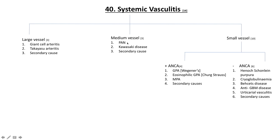Medium vessel vasculitis is divided into polyarteritis nodosa, called PAN, which is infamous for causing mononeuritis multiplex and has a close association with hepatitis B. Then there is Kawasaki disease, which occurs more often in the pediatric population. Small vessel vasculitis is divided into ANCA-positive and ANCA-negative. ANCA stands for anti-neutrophil cytoplasmic antibody.